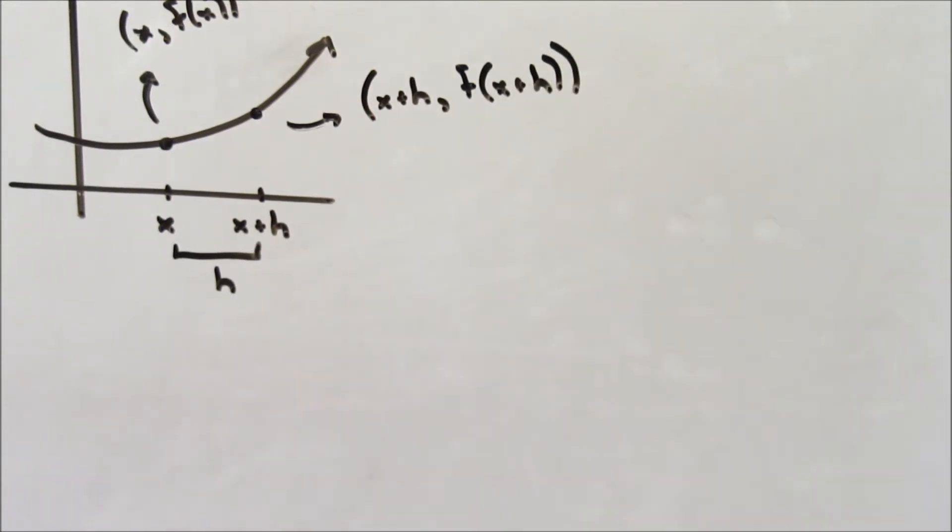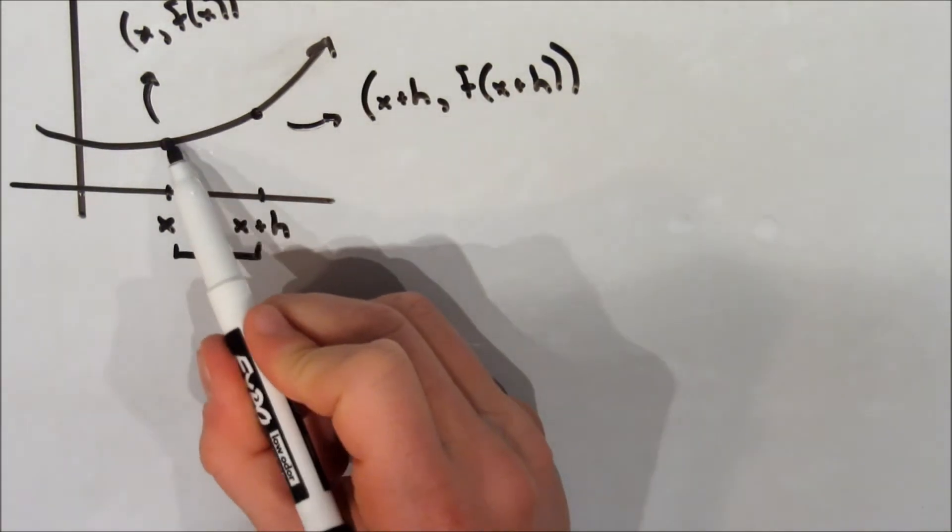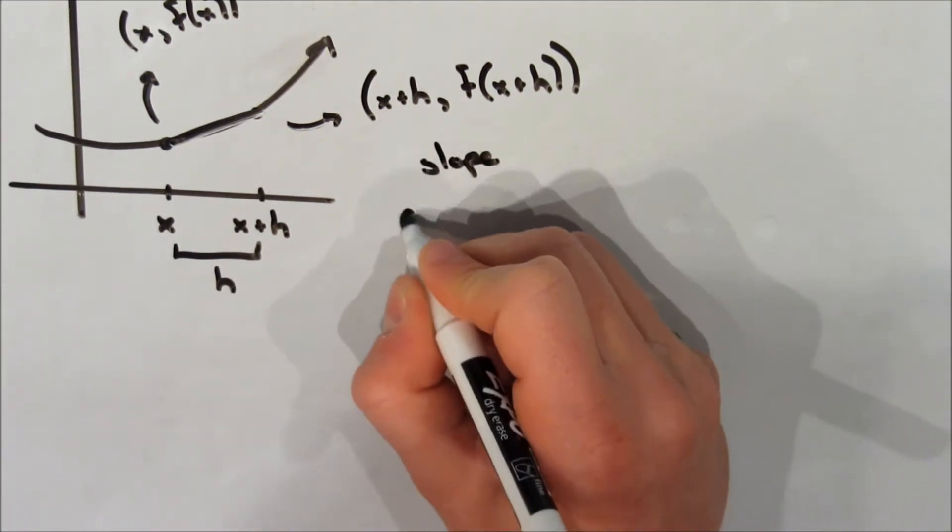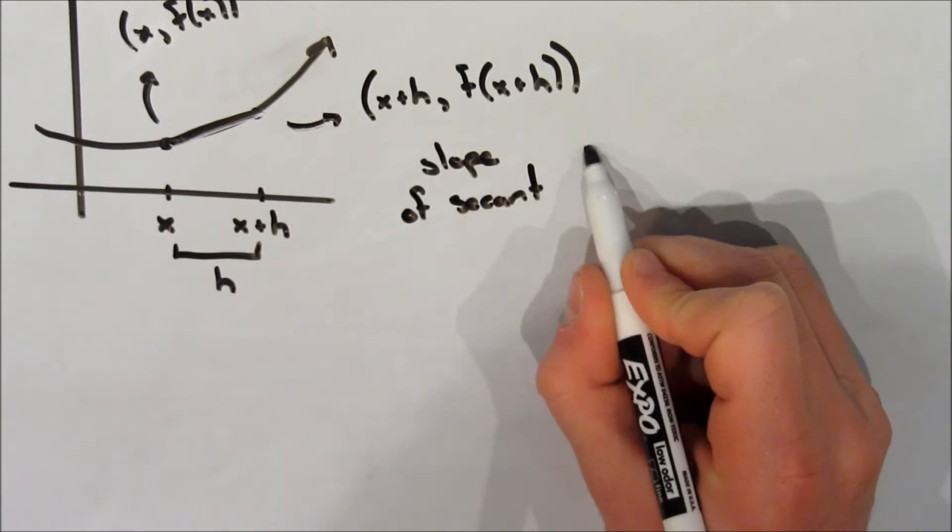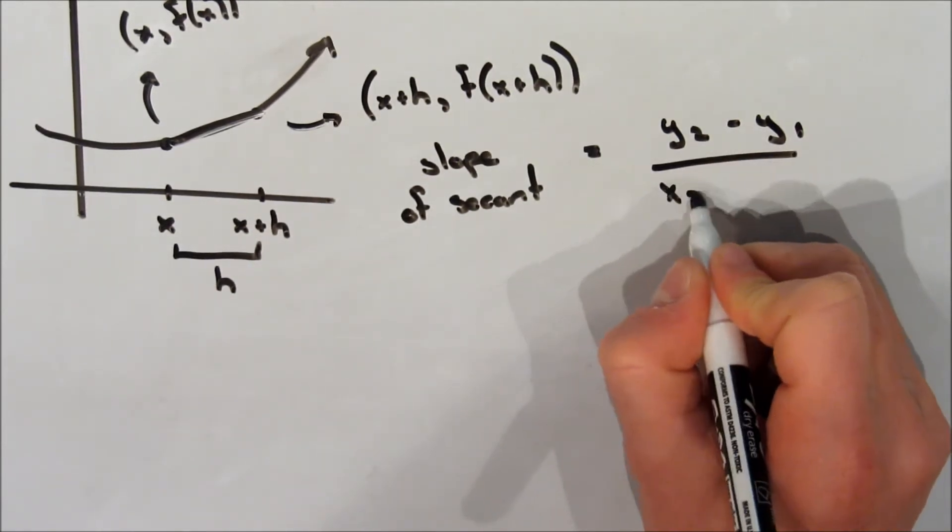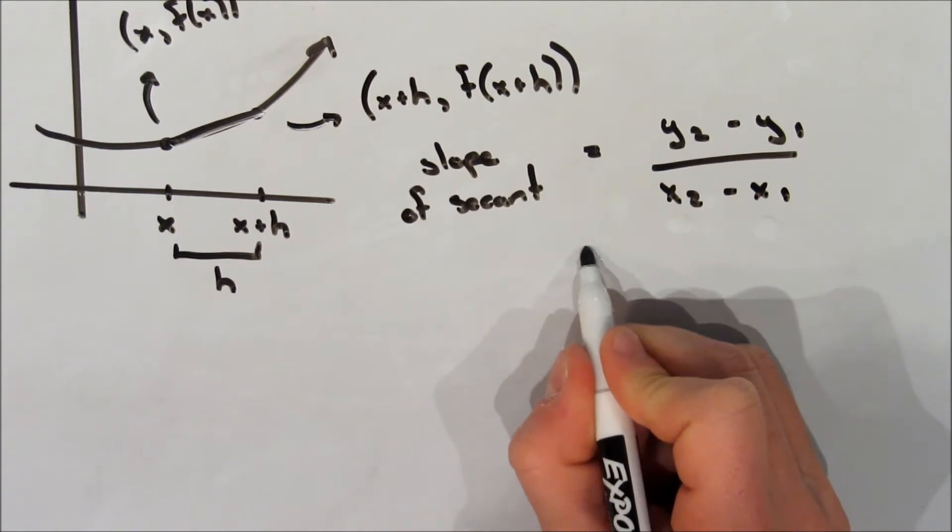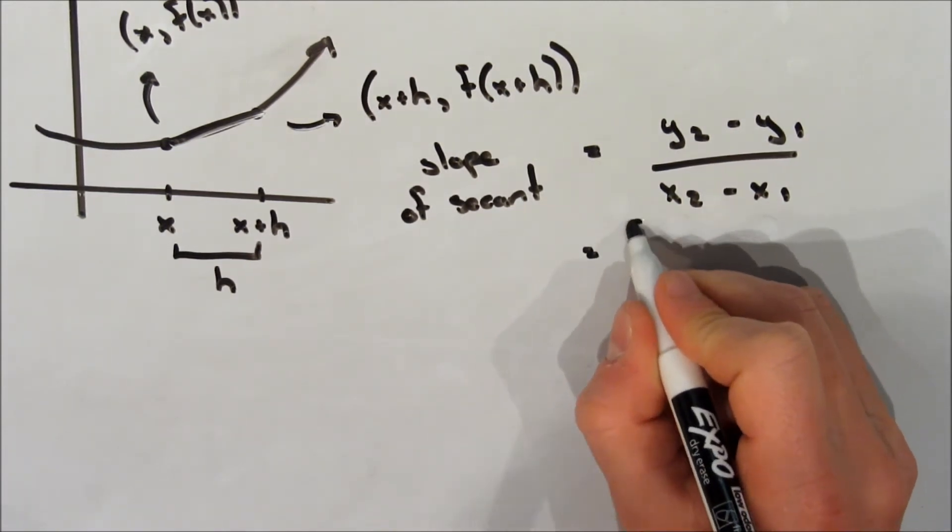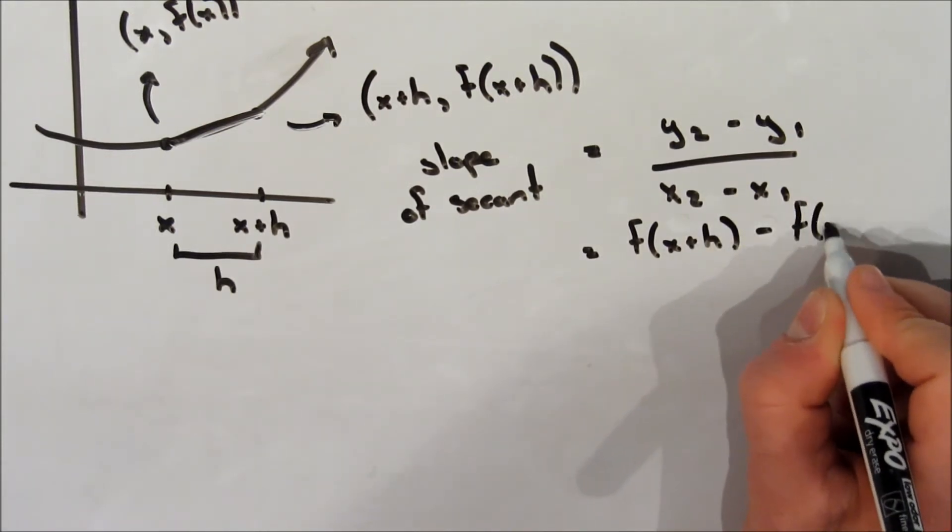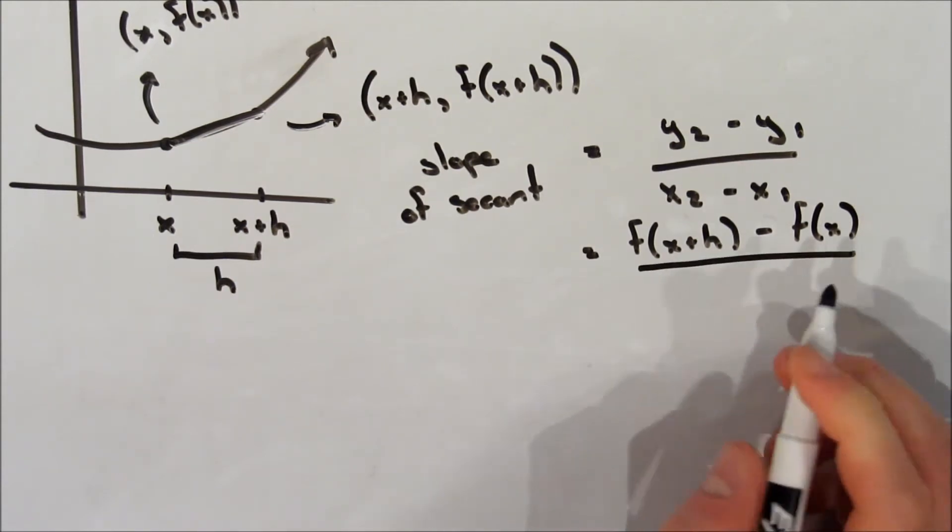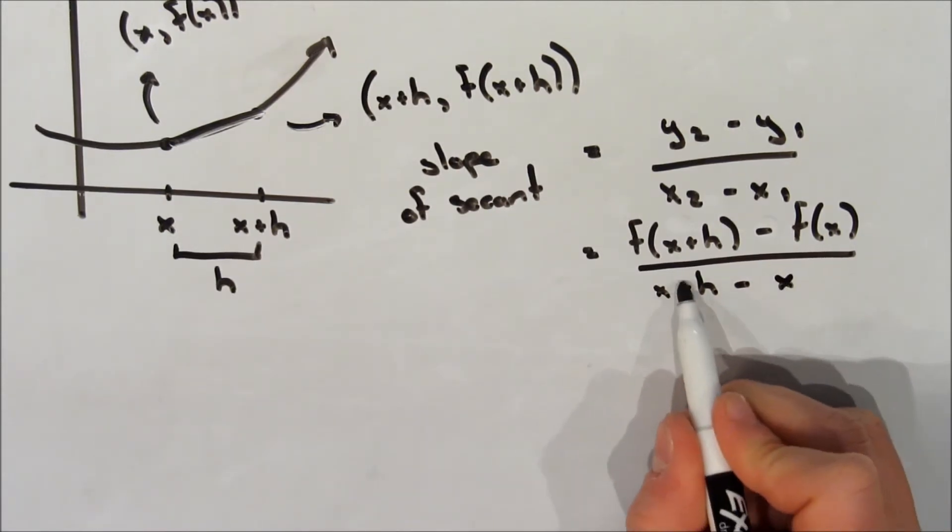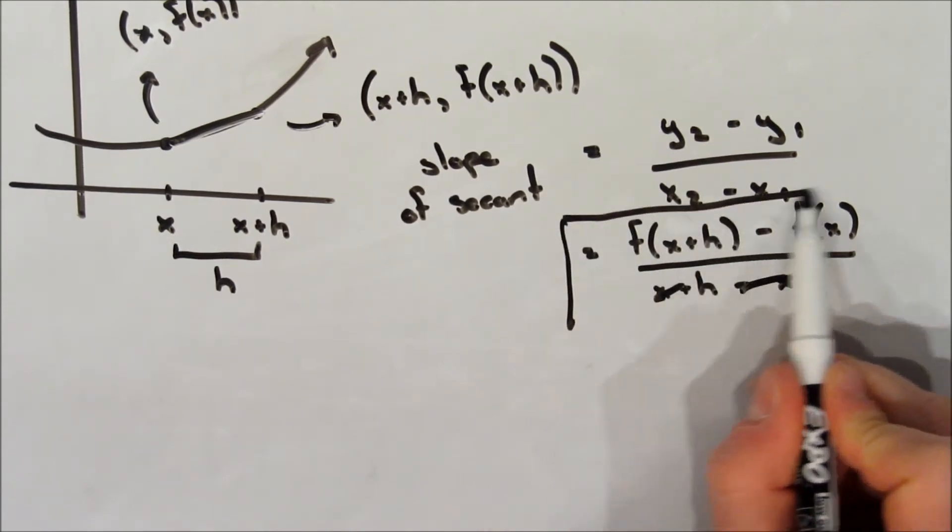Now, let's find the slope of their secant line. So, we're going to connect the two points and use the formula for slope. Slope is equal to y2 minus y1 over x2 minus x1. So, the slope of the secant line is our y-coordinate of the second point, which is f of x plus h, minus the y-coordinate of the first point, which is f of x, over the x-coordinate of the second point, which is x plus h, minus the x-coordinate of the first point, which is x. And we can cancel these out to just get h on the bottom.